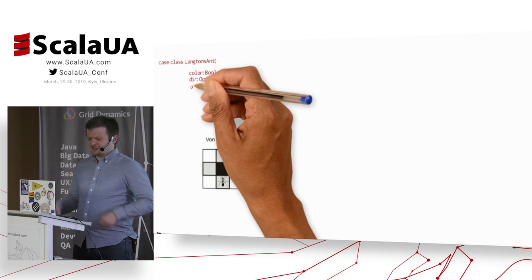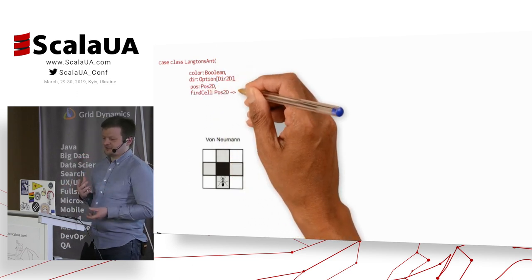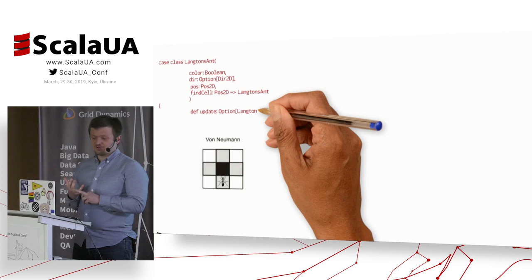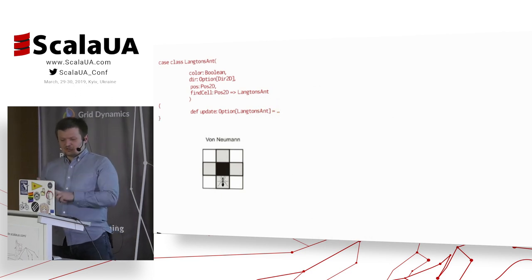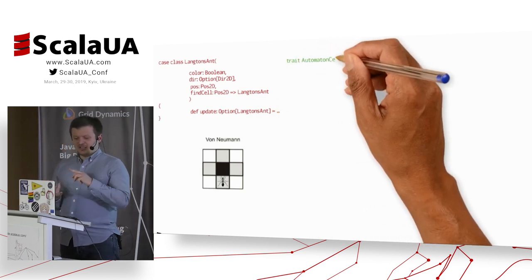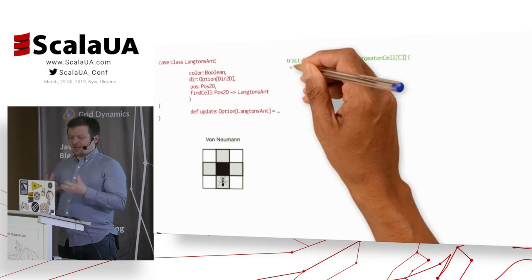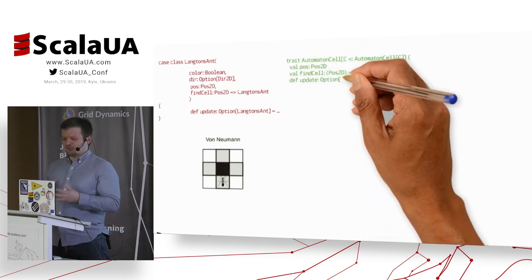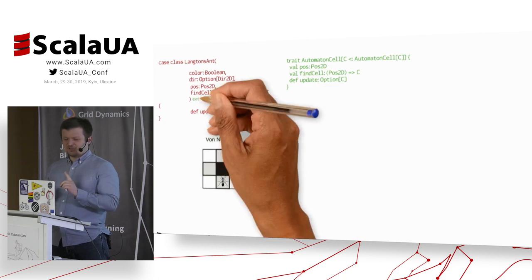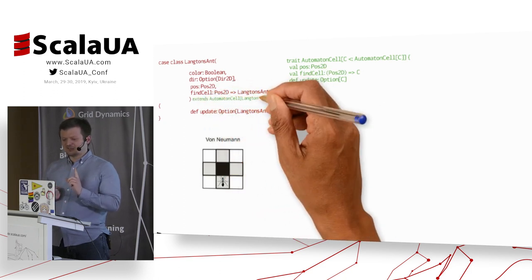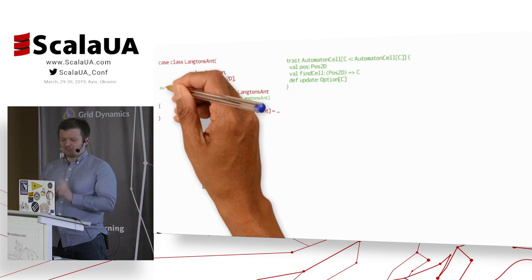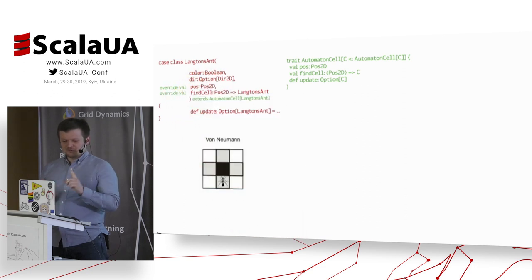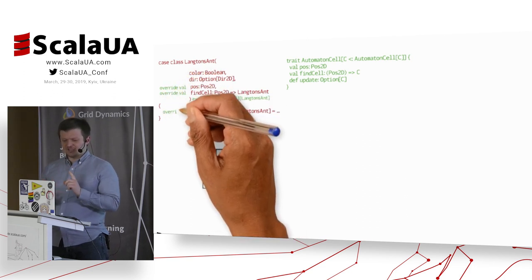So we can create the case class, Langton's ant. It will have the color, the direction, the position, the function to find cell in the neighborhood, and the update method. So you can see that a lot of it is exactly the same. We can create a trait for automaton cell that will have the things that are the same in Langton's ant as they are in Game of Life. So that's the position, the method to find cells, and the update method.